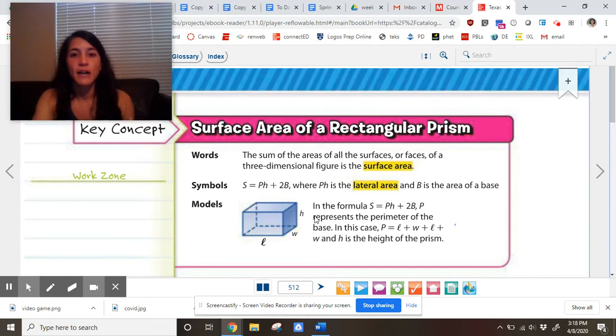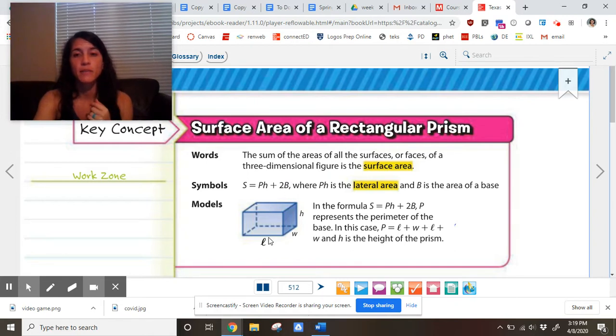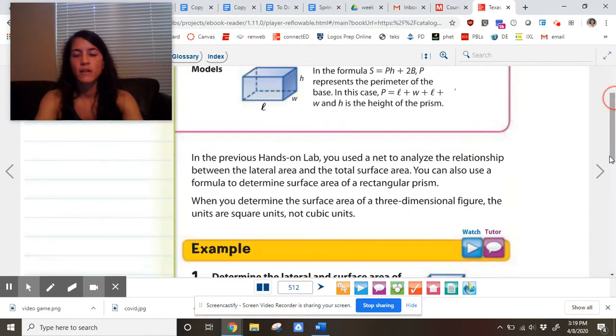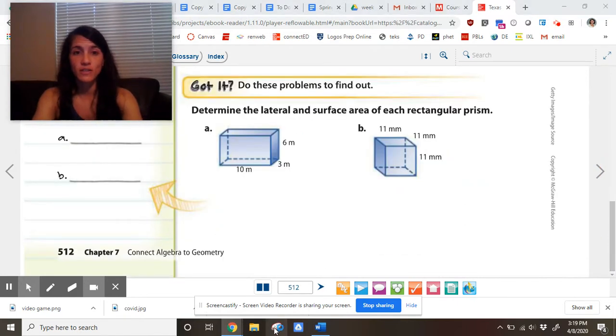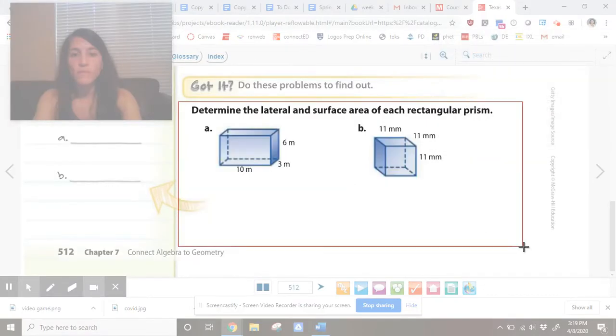It spells it out right here where P is the perimeter of the base. And if you have a rectangular prism, the base is going to be a rectangle. If you have a triangular prism, the base is a triangle. But PH is the lateral area. And the lateral area is just the area around the sides. The lateral area doesn't include the bases. Just think the lateral is the sides. And then 2B is the two bases, the top base and the bottom base. Here's an example done for you. I'm not going to sit here and read that out to you, but we are going to do these two examples at the bottom.